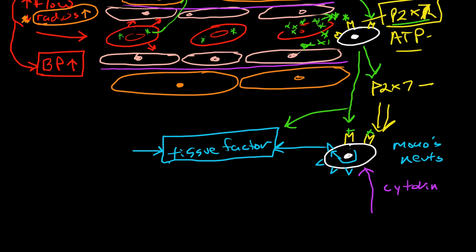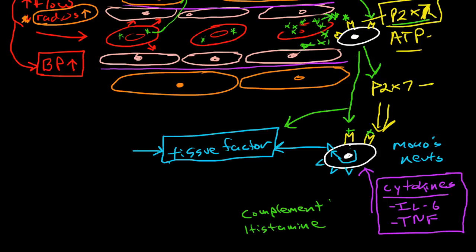And the ones that I'm aware of that will stimulate monocytes and neutrophils to start expressing tissue factor include IL-6 and tumor necrosis factor. And I think there's a relatively long list. So immune system cells are going to excrete these things for a variety of reasons, including the presence of activated complement, histamine,